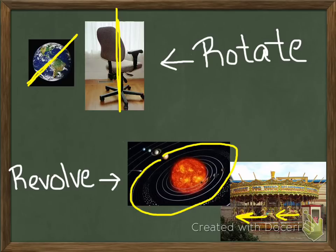When I'm talking about rotation, I'm talking about things like the earth rotating on its axis. You can see the axis drawn there in yellow, and that chair, if you spin around in an office chair, you're rotating around the axis of the office chair.